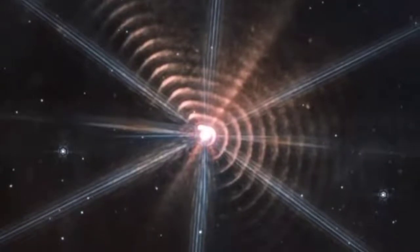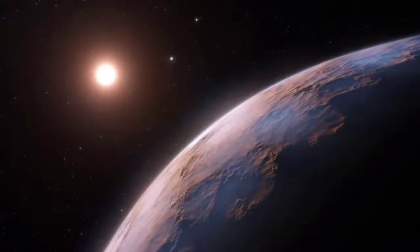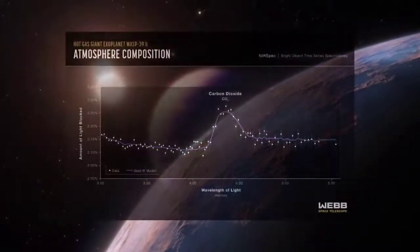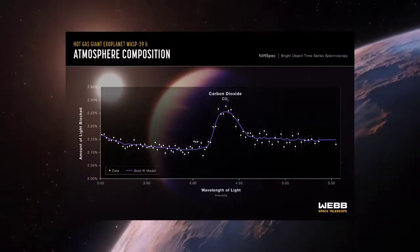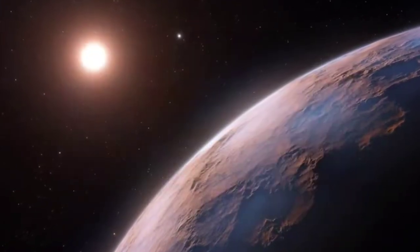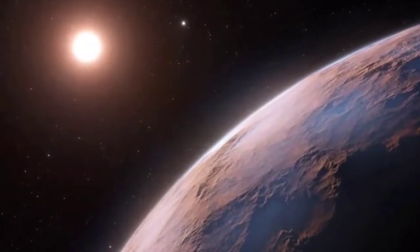In an early science result, astronomers used James Webb Telescope to detect carbon dioxide in the atmosphere of an exoplanet. It's the first time scientists have confirmed this particular chemical's presence.